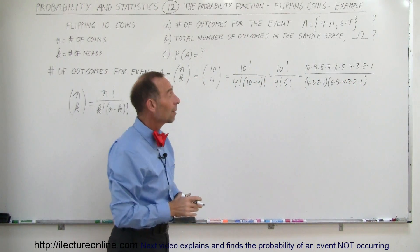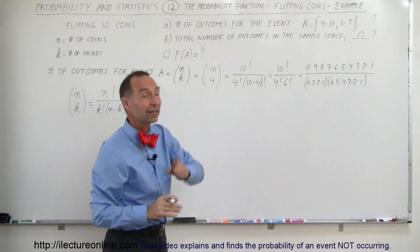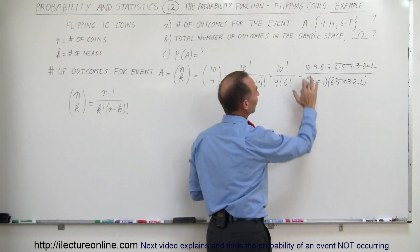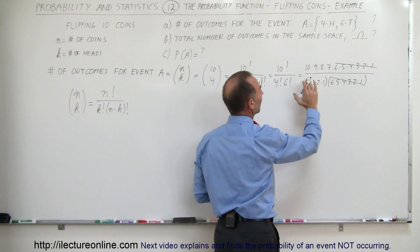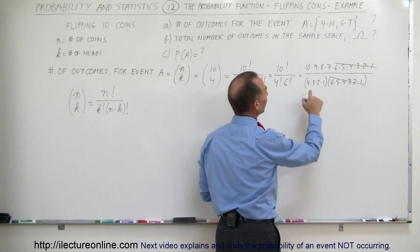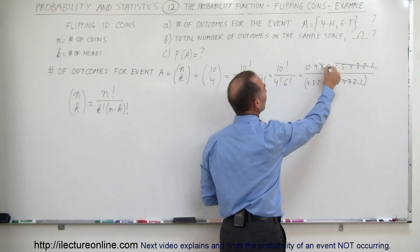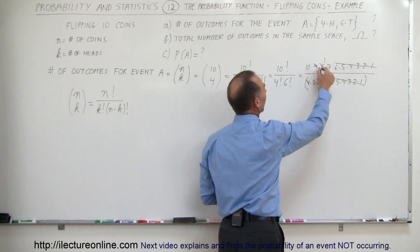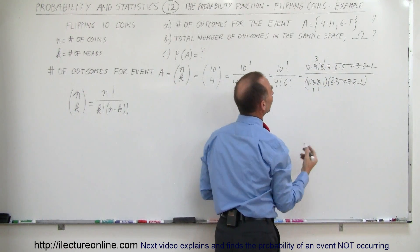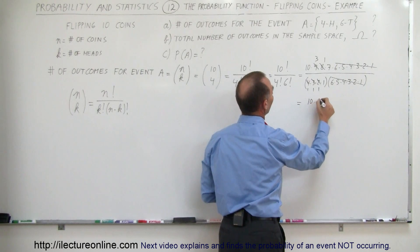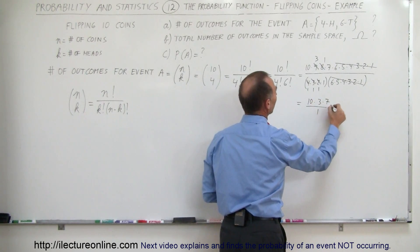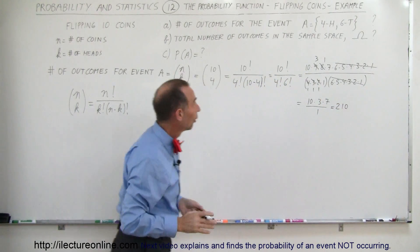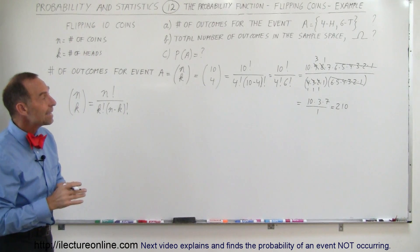That's what factorial means. Before you grab your calculator, you can simplify: the 6 factorial on top cancels with the 6 factorial on the bottom. All we have left is 10 times 9 times 8 times 7, divided by 4 times 3 times 2 times 1. Notice that 4 times 2 is 8, and we have an 8 on top — so those become 1. Then 9 divided by 3 is 3, divided by 3 is 1. Simplified, this becomes 10 times 3 times 7, which equals 210. The total number of outcomes for event A is 210.